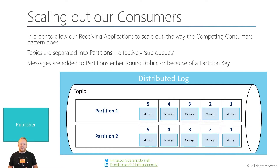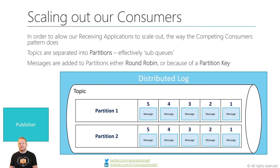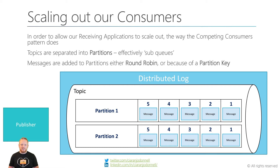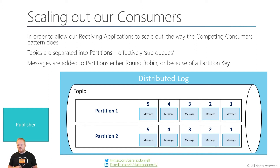When we want to scale out our applications on a traditional message broker, we'd use competing consumers — two receiving applications reading from the same subscription, and the message broker takes different messages from the front of the queue and gives them to the different receivers. That isn't how it works on one of these brokers. What we actually have to do is break the topic up into what we call partitions. These are effectively like sub-queues to the topic, and messages are added to the partitions either round robin — one after the other, everyone taking a turn — or based on some form of partition key.